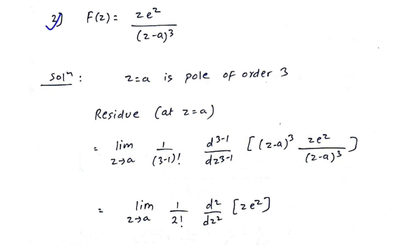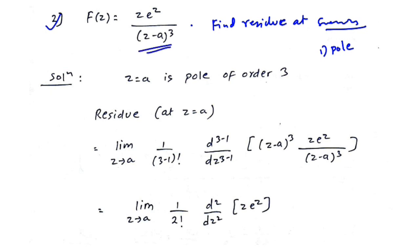Example 2: f of z equals z times e raised to z upon (z minus a) cubed. There is no specific point given, so first find the pole by equating the denominator to 0. From (z minus a) cubed equals 0, z equals a repeated thrice, so the order is 3, meaning m equals 3.